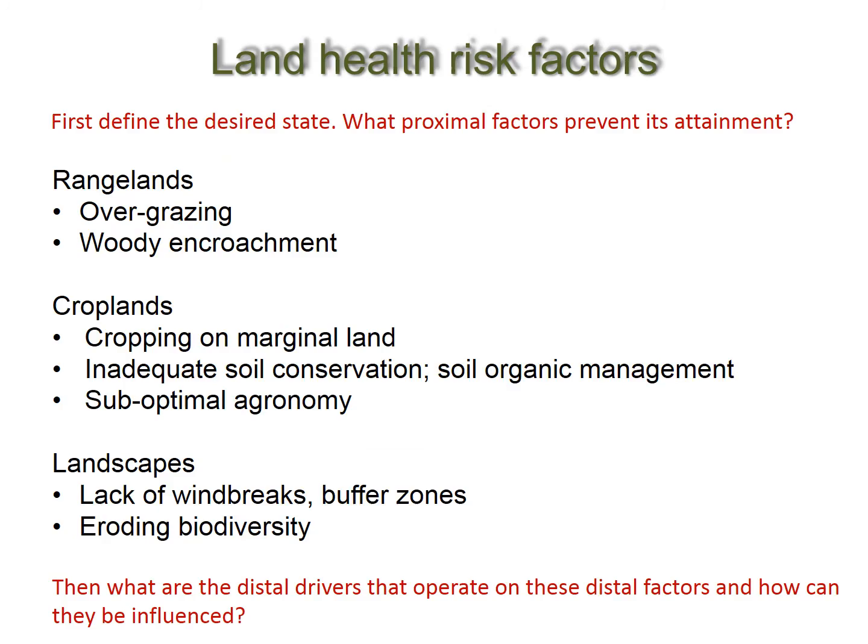Looking at examples of proximal risk factors for land degradation, we first need to define our desired state — what do we want landscapes to look like, and what proximal factors prevent us attaining those desired states? For rangelands, overgrazing and woody encroachment are examples of proximal risk factors. For croplands, cropping of marginal land and inadequate soil conservation are examples. We can very well define the key risk factors, so now we need to ask: what are the distal drivers of these proximal factors, and how can they be influenced?